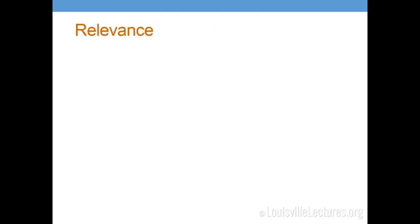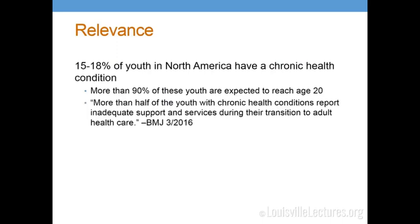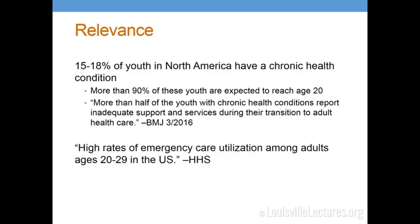Why is it important? It's recognized that all adolescents deserve seamless access to a primary medical home as well as transition to an adult medical home. It's becoming more important as children with complex diseases are now living into adulthood. About 15-18% of youth in North America have a chronic health condition, and more than 90% of those are expected to reach age 20. More than half of youth with chronic health conditions report inadequate support and services during their transition. Among those ages 20-29, there are high rates of emergency care utilization — for example, sickle cell patients who are frequent flyers because they no longer have an established hematology doctor.